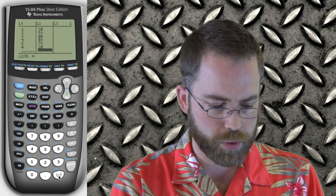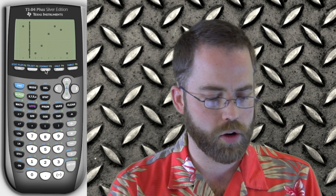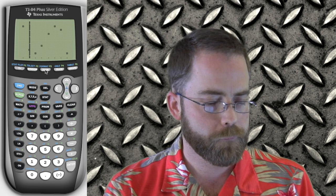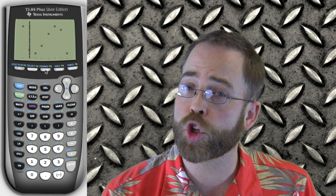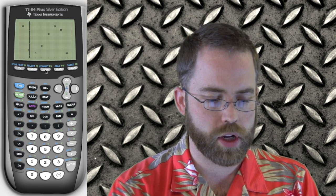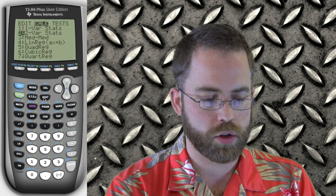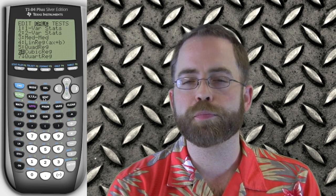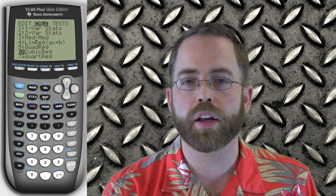All right. So I want to see what that data looks like. So I'm going to turn a stat plot on, and then I'm going to do zoom number nine, which is zoom stat. All right. So here I've got a bunch of data. And broadly speaking, I can look at this and say, aha, there are three branches. It's going up at the left and seemingly down on the right. So maybe a negative cubic function would be a reasonable expectation for this data.